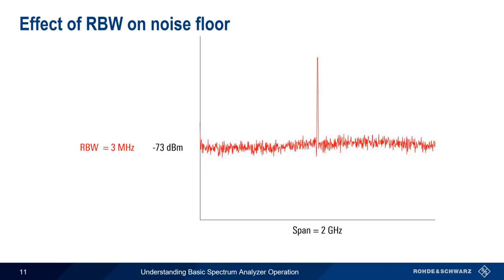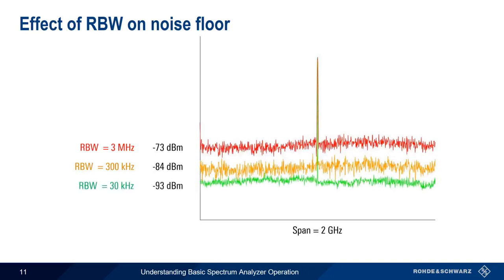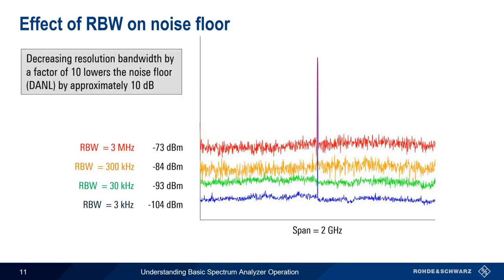Narrowing the resolution bandwidth to 300 kilohertz drops the noise floor to minus 84 dBm. At a resolution bandwidth of 30 kilohertz, the noise floor falls again to minus 93 dBm, and at a resolution bandwidth equal to 3 kilohertz, the noise floor has an average value of minus 104 dBm. You may have noticed that decreasing the resolution bandwidth by a factor of 10 reduces the noise floor by about 10 dB. As a practical matter, if we want to see signals close to the noise floor, we should use narrower resolution bandwidths.